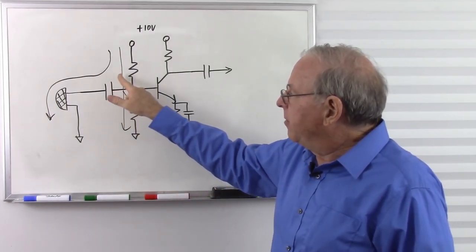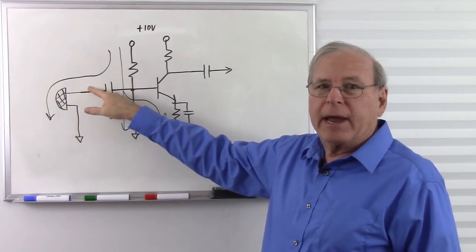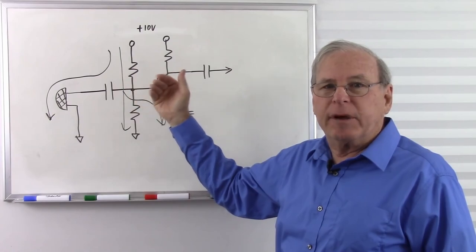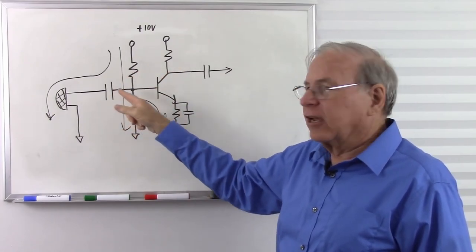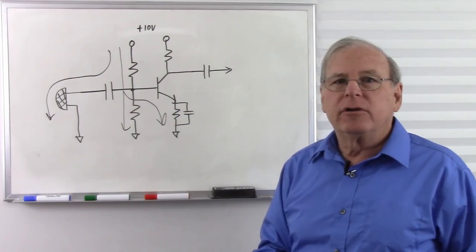And so that is keeping the direct current from going to the microphone, but yet the alternating current from the microphone goes right through the capacitor because the capacitor, especially if it's big enough, is going to act like a short circuit to alternating current, but once again an open circuit to direct current.